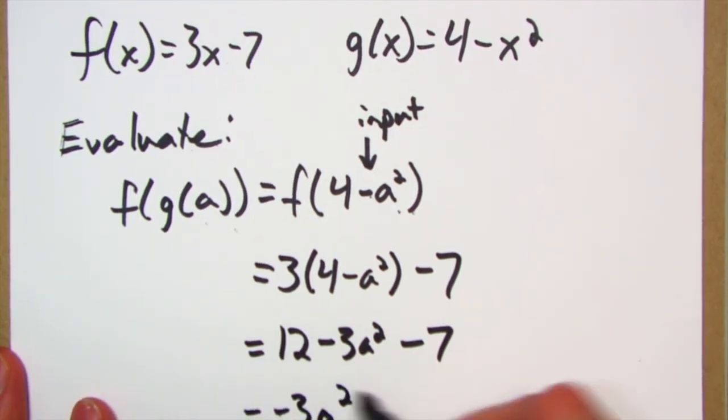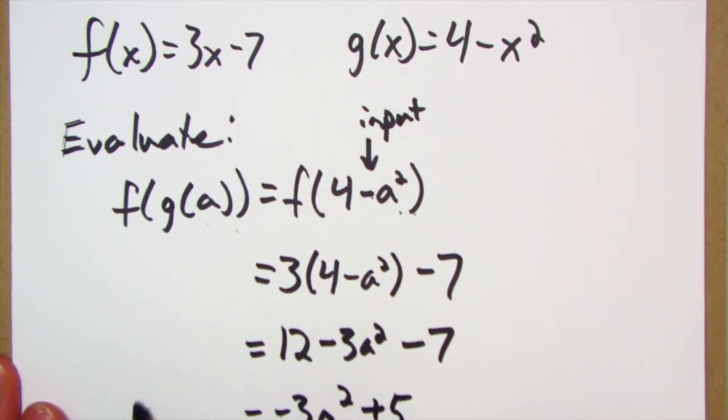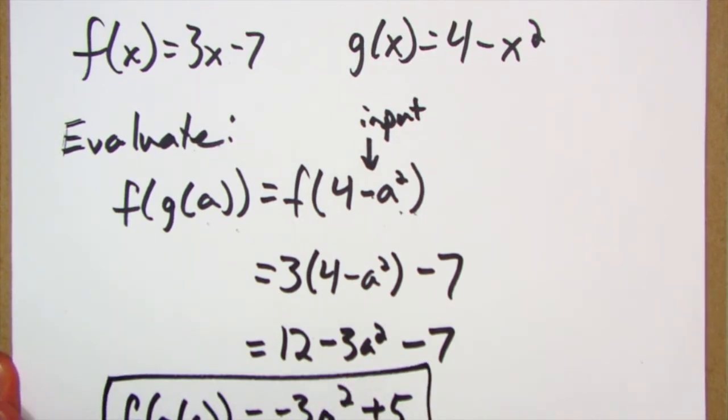And then I could write this in standard form: negative 3a squared, and 12 minus 7 is plus 5. So f of g of a was negative 3a squared plus 5.